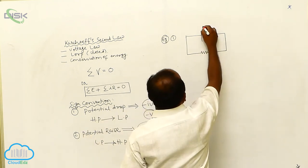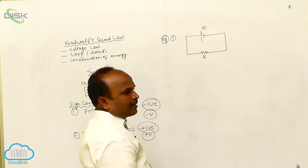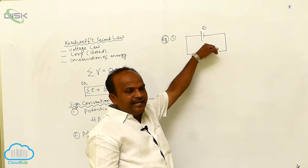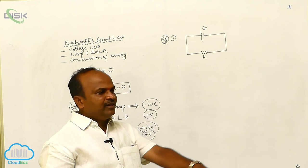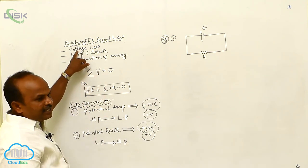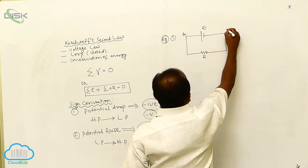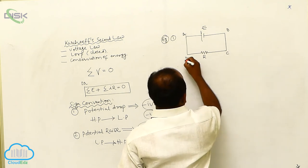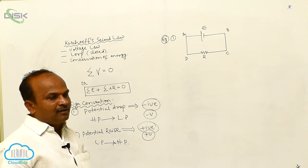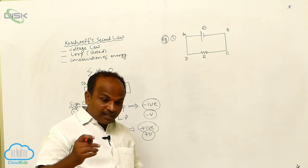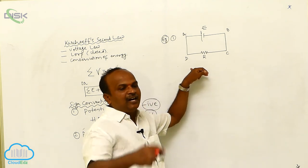What is the EMF of the cell? E is the EMF of the cell. What is the resistance? R is the resistance. This cell is considered an ideal cell whose internal resistance is zero. This is a simple electrical circuit for which we will apply Kirchhoff's voltage law. After observing the circuit, name the points: this is point A, this is point B, this is point C, and this is point D. After naming the circuit, do the current distribution. The current distribution may be started at any point in the circuit, and you want to reach the same point after distributing the current.